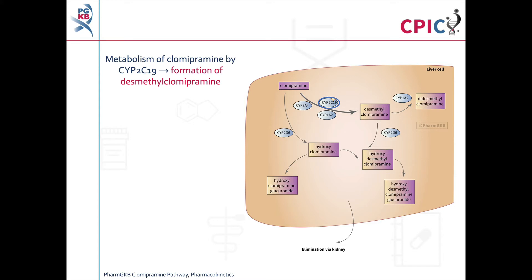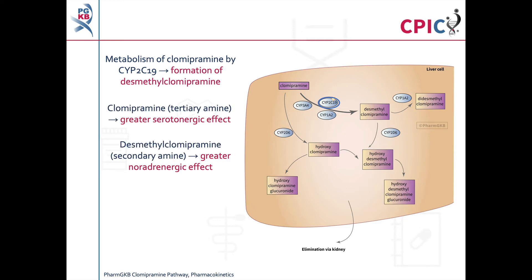Clomipramine is metabolised by CYP2C19 to desmethyl clomipramine, which is an active metabolite. Clomipramine is a tertiary amine with a greater serotonergic effect, while desmethyl clomipramine is a secondary amine with a greater noradrenergic effect.